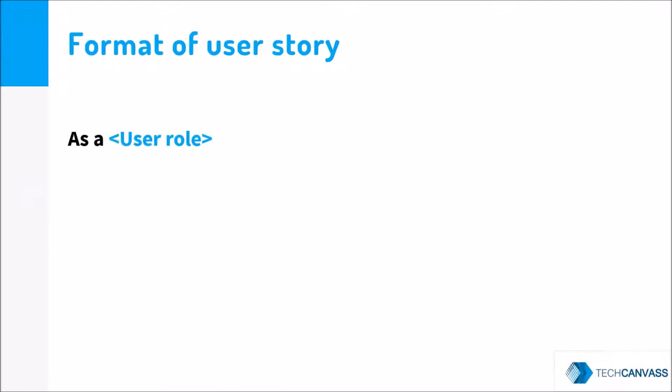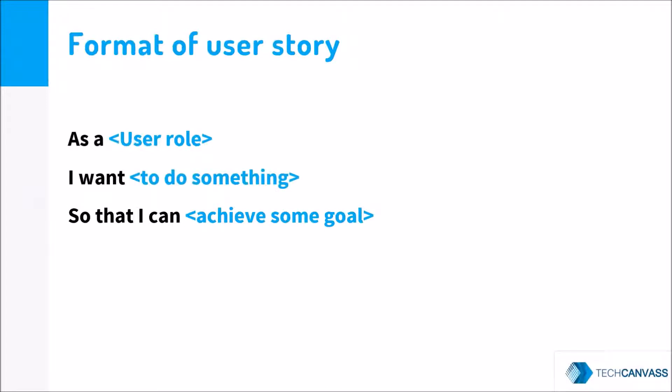A user story has three parts and is written in this format: As a user role, I want to perform something in the system so that I can achieve some goal. An end user is going to work with the system to perform some action — for example, to register themselves, to make a purchase, or to search something.